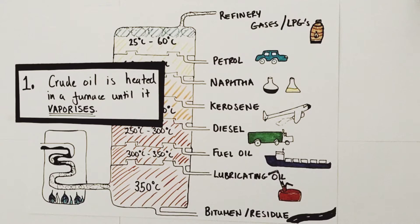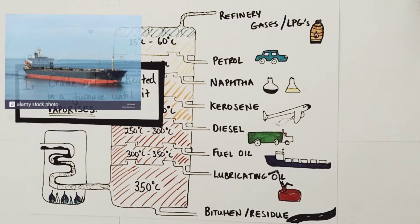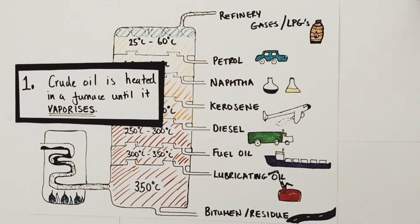Picture the scene: a massive oil tanker has just docked outside of this refinery and is now pumping its crude oil to be processed. The first stage is that crude oil, currently a liquid, will be pumped into a furnace where it's heated until all of it is vaporized into a gas.